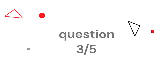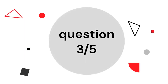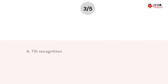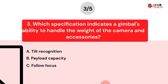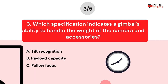Question number three. Which specification indicates a gimbal's ability to handle the weight of the camera and accessories? Option A: Tilt recognition. Option B: Payload capacity. Option C: Follow focus. Now you have about 15 seconds to think about your answer.